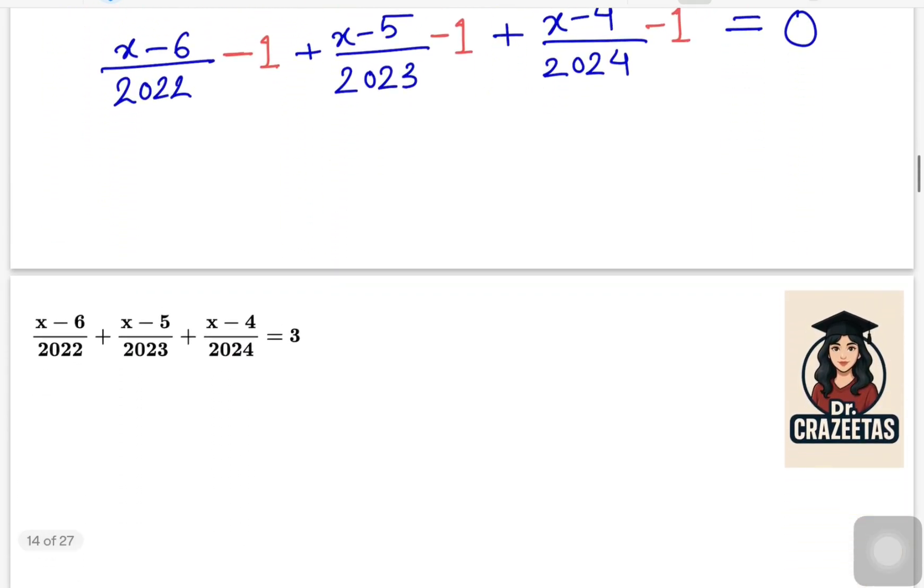So stay tuned to get the value of x, how we are solving step by step. Here we know that when we divide the same number we get 1. So in place of 1, we are putting 2022 in the first place, 2022 divided by 2022. Same we are doing for next two fractions: 1 equals 2023 over 2023, and for the third one 2024 divided by 2024.